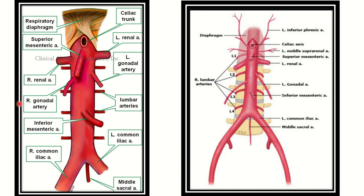We can see in the first picture that the anterior aortic branches are shown here. We can see the diaphragm at the top, and this is the terminal part of the abdominal aorta. The terminal branches are the right and left common iliac arteries. The first and most superior anterior branch is the celiac trunk, then the superior mesenteric artery, which is the second anterior branch of the aorta.